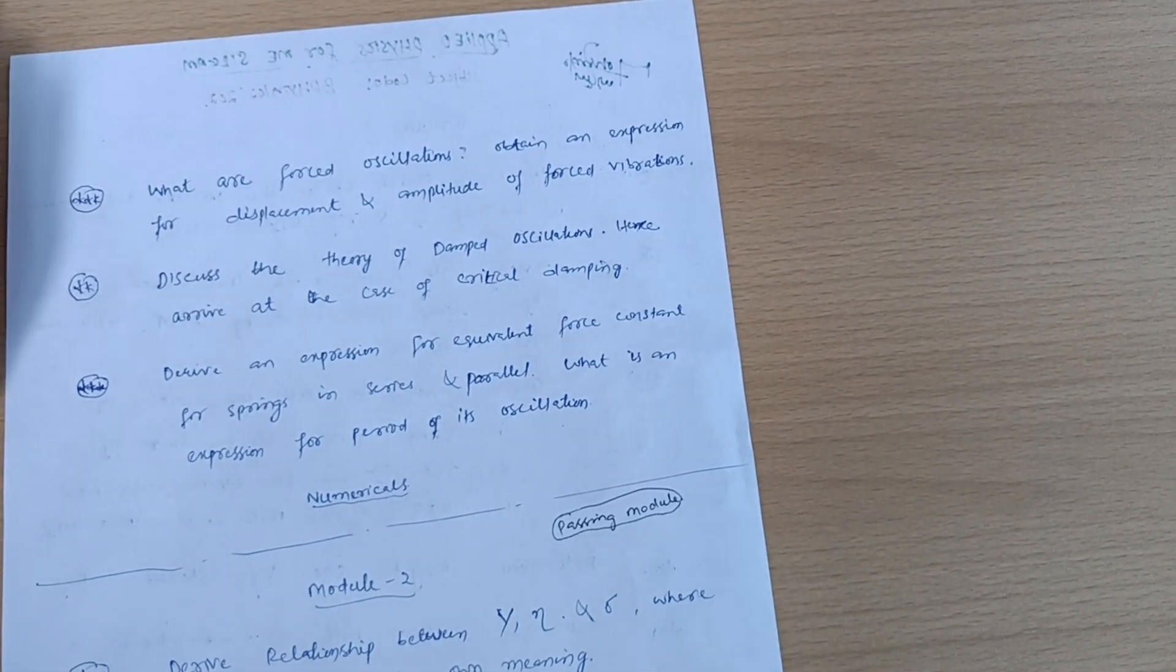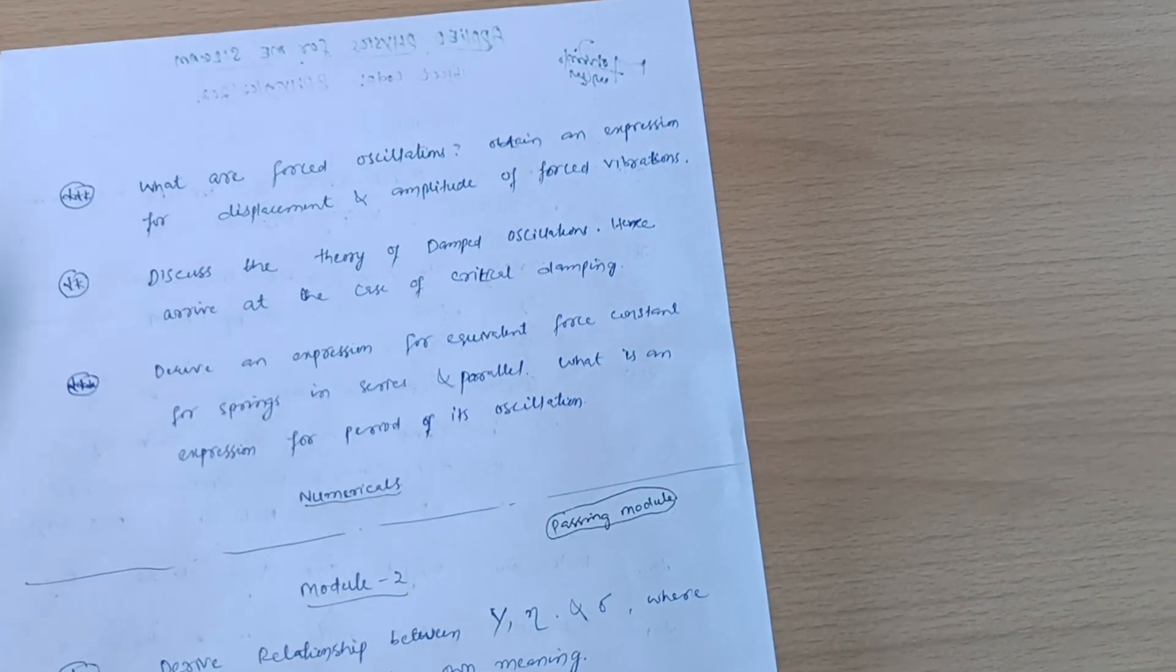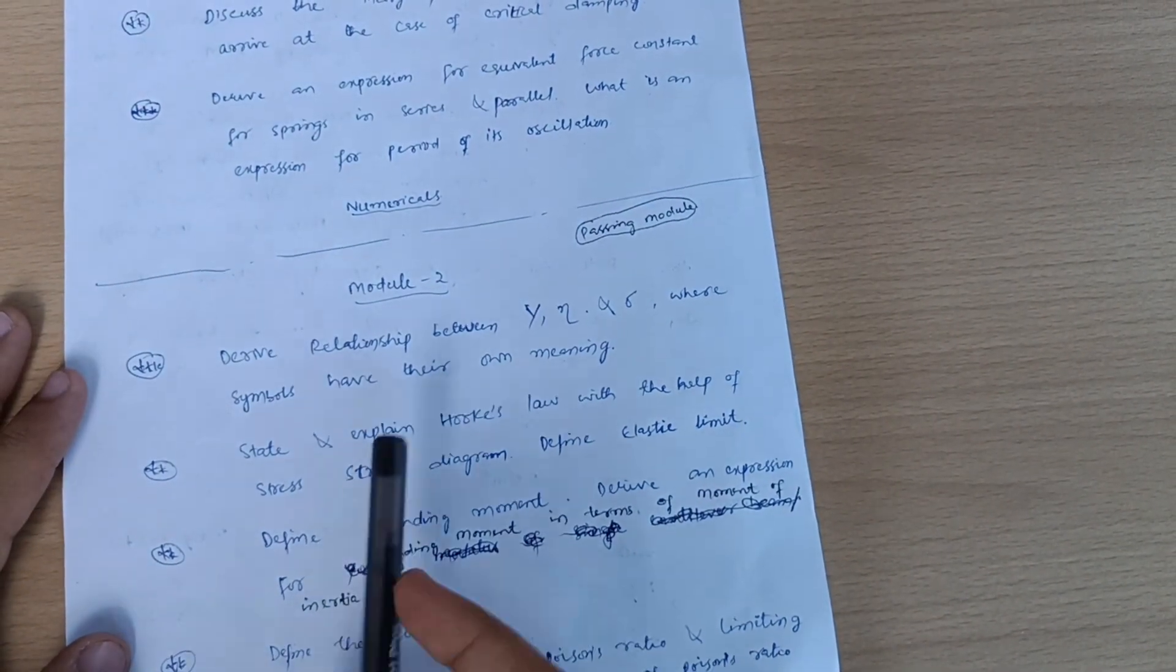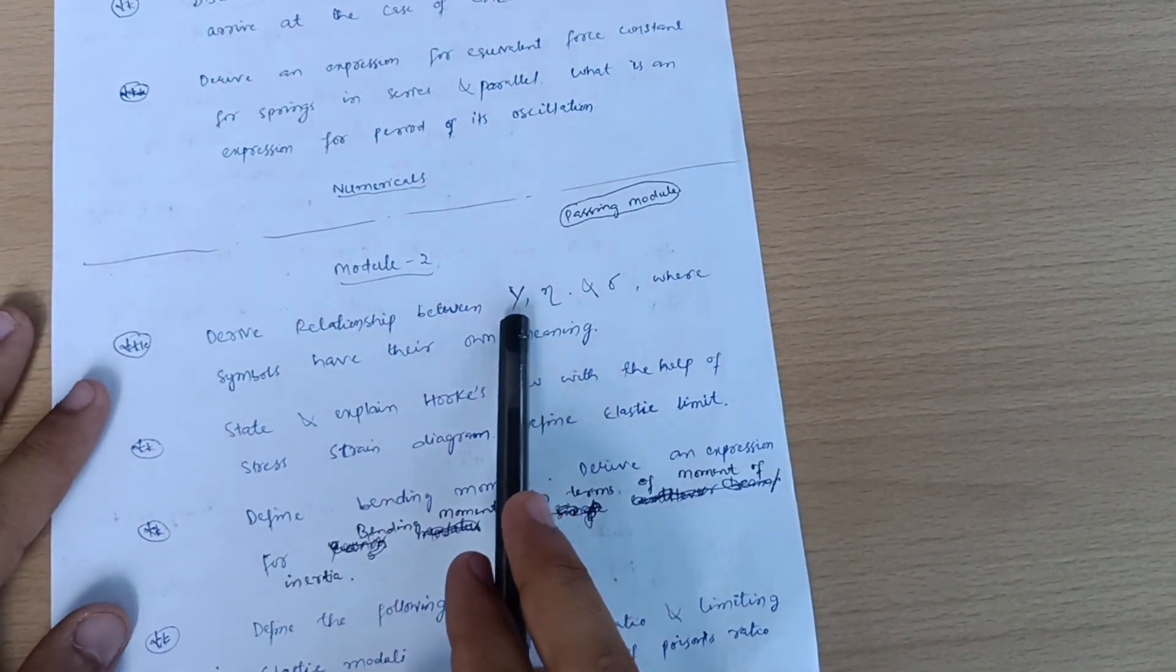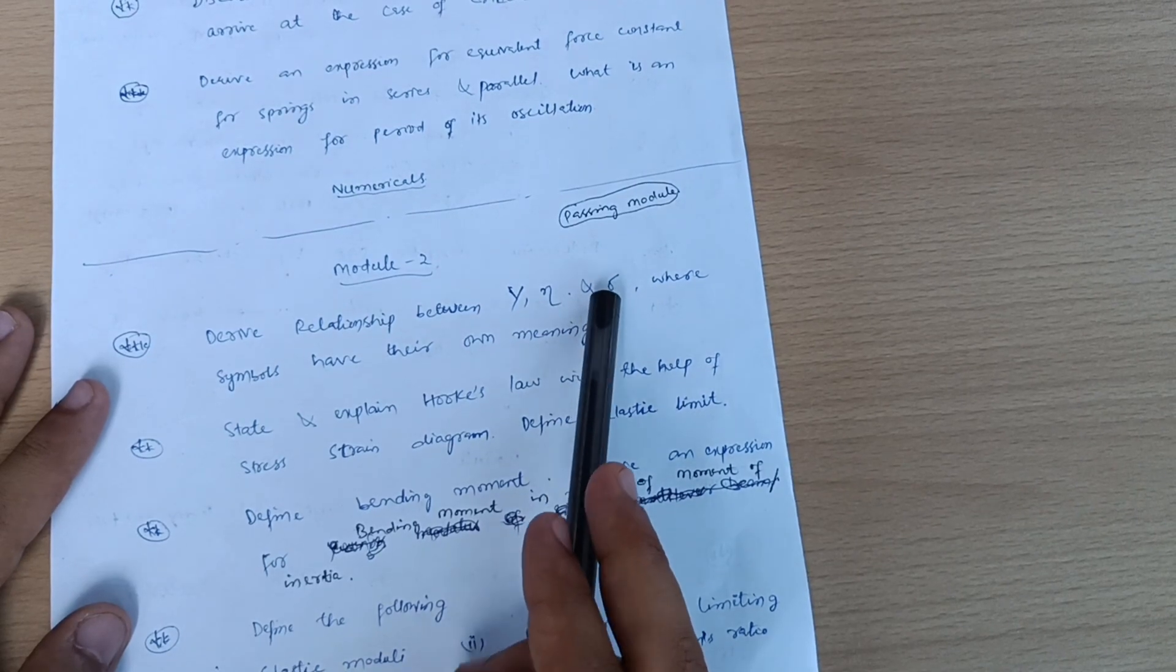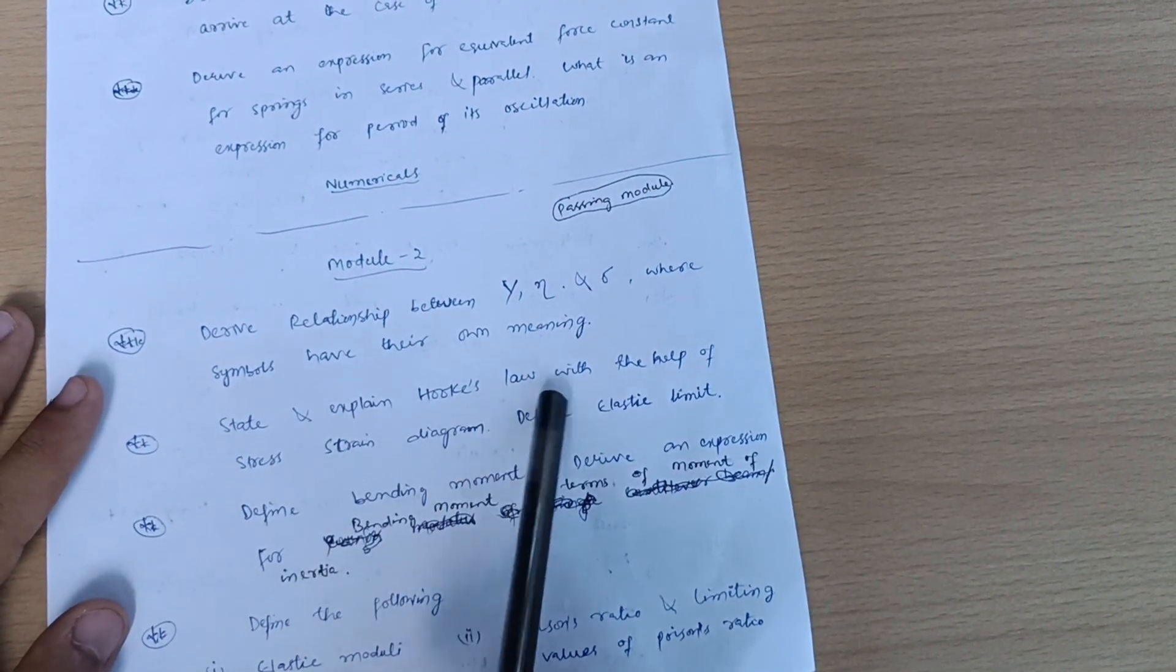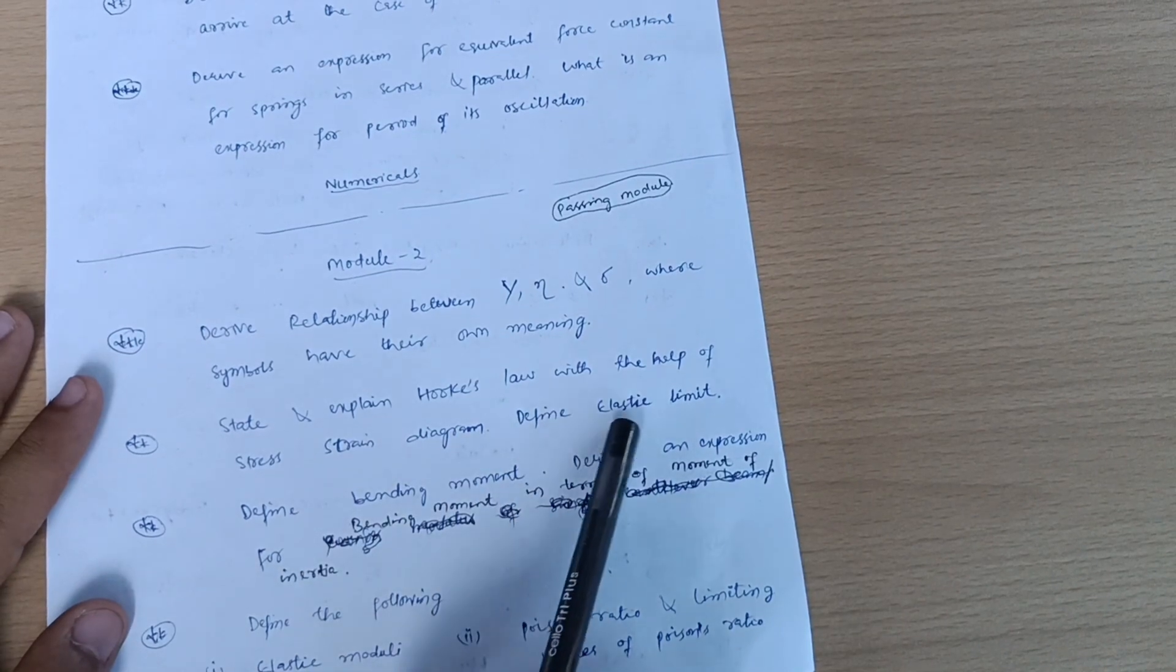Next passing module is Module 2 in which you have to cover some important questions like relationship between Young's modulus, rigidity modulus, and Poisson's ratio where symbols have their own meaning. State and explain Hooke's law with the help of stress-strain diagram, define elastic limit.